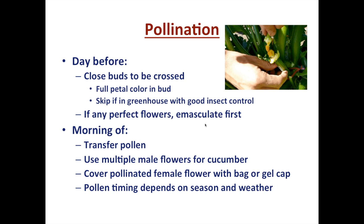Another step required with some flowers, before closing them, is emasculation. If they are perfect or hermaphrodite flowers — for instance, on those andromonoecious plants — we have to remove the anthers the day before to avoid self-pollination where we want a cross. The morning of the pollination, it is a matter of unclipping the flowers and transferring the pollen. For cucumber, which doesn't produce much pollen per flower, we use more than one male flower. Then we cover the female flower with a tightly-fixed bag, or a gel cap for smaller flowers in melons and watermelons, to ensure no other bees arrive with foreign pollen.